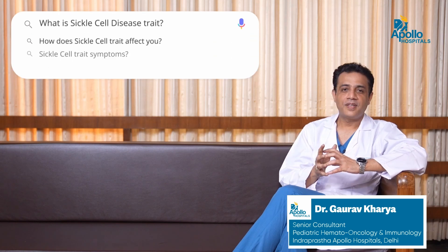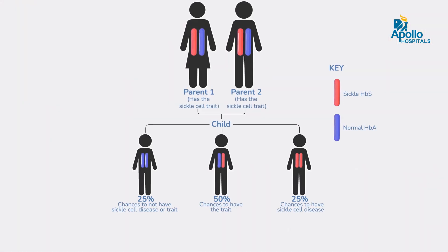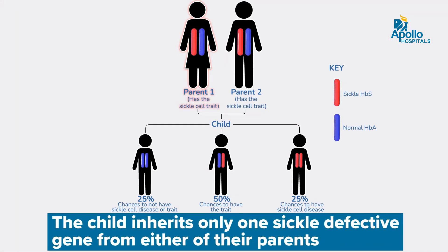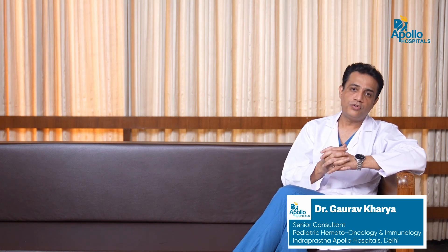Sickle cell trait is also called a heterozygous sickle cell state. This is a state where a child inherits only one defective sickle gene from one of the parents, either mother or father. These people or these kids are affected with one defective sickle cell gene which does not affect their quality of life. But they are at risk of passing it to future generations, so it should be taken into consideration at the time of their marriage.